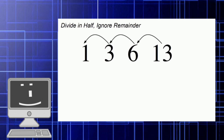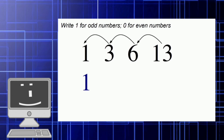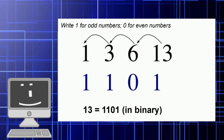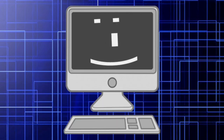We will ignore the remainder. We have stopped at the number 1, which is our stopping point — whenever we reach 1 we stop dividing. The next step is to write 1 below the number if it is odd and 0 if it is even. Once we finish this step, we will have a line of digits which is the binary representation of the number 13.